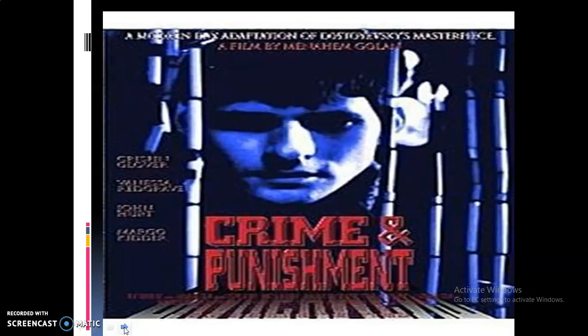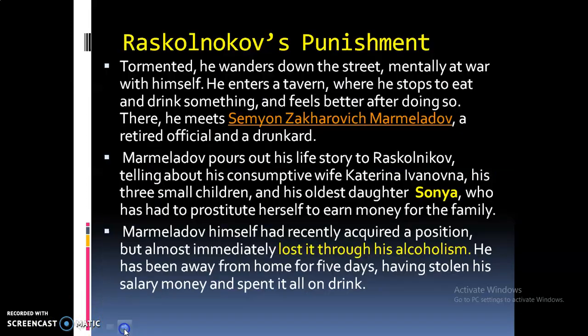After escaping, Raskolnikov soon falls ill with fever and spends several days unconscious in his tiny apartment. When he begins to recover, he learns that his sister Dunya plans to marry a wealthy man named Luzhin. This is the second part of the novel — what happens after the crime, after the murder — which I have titled 'Raskolnikov's Punishment.'